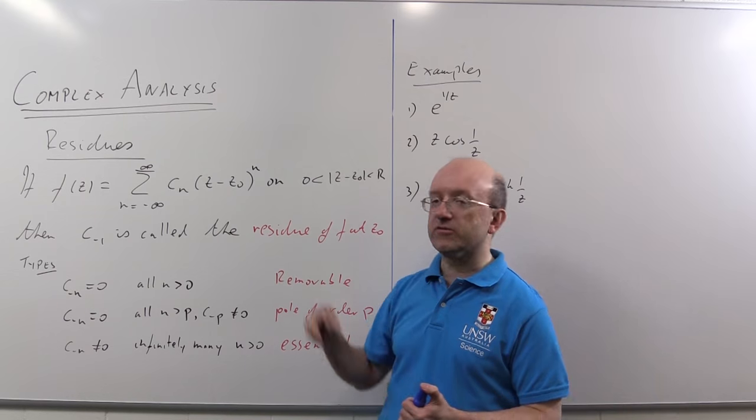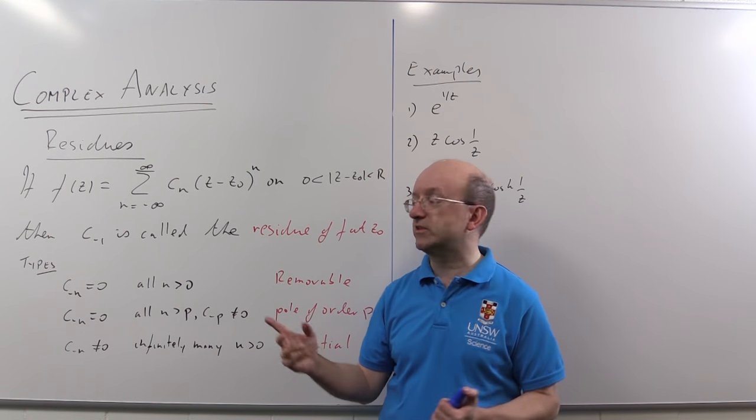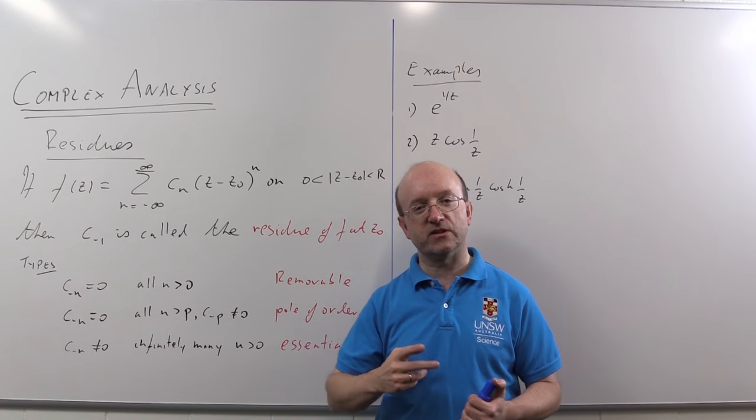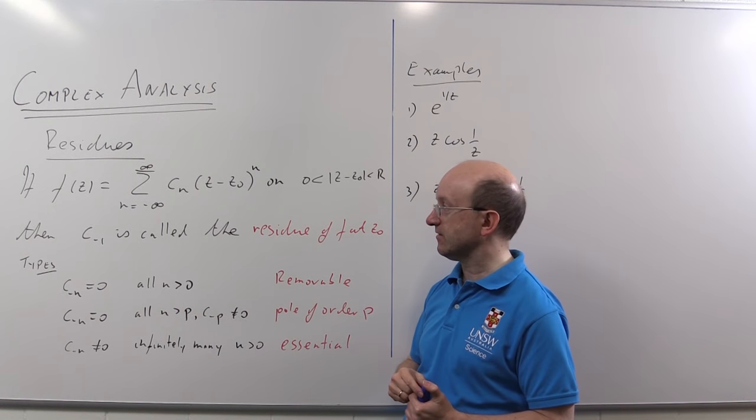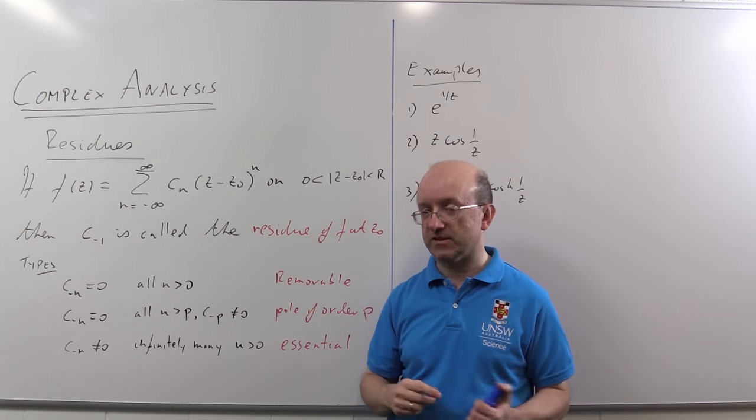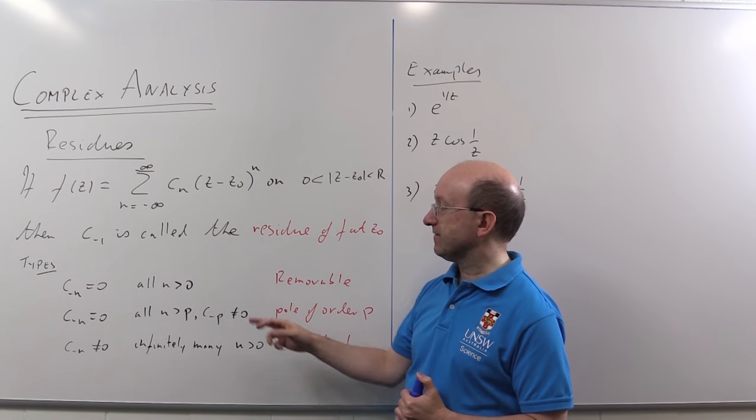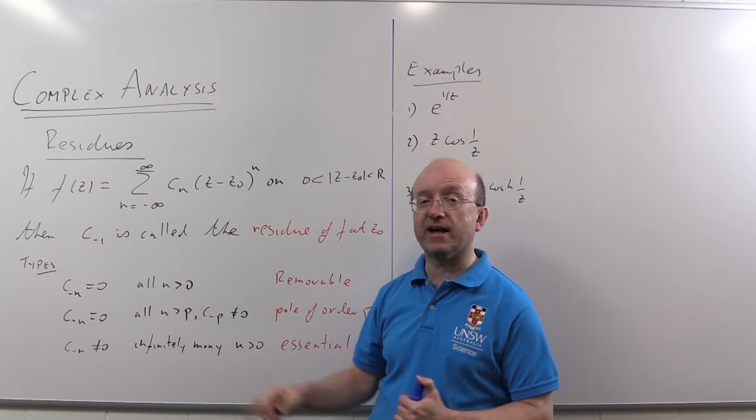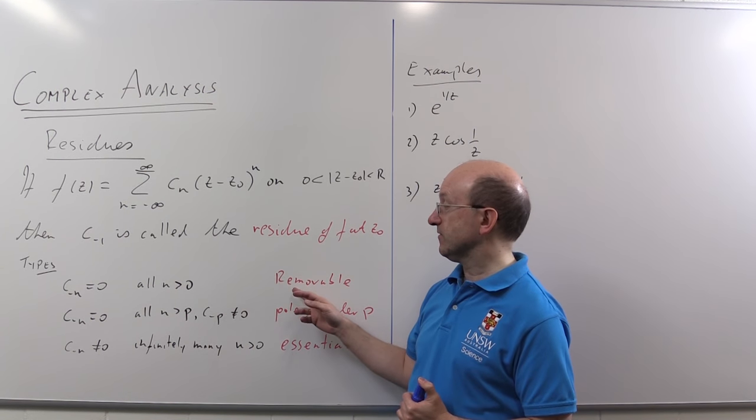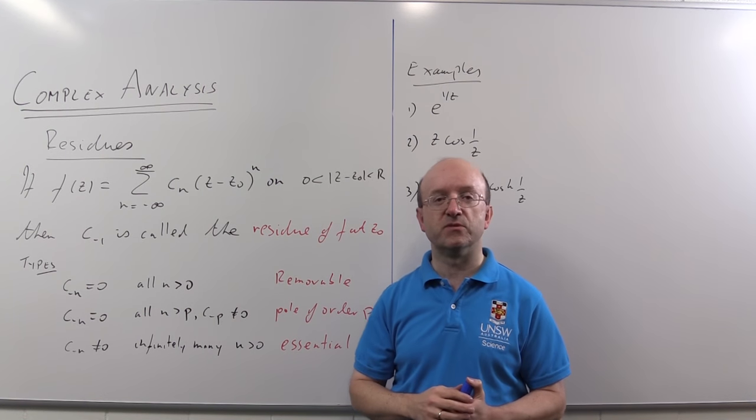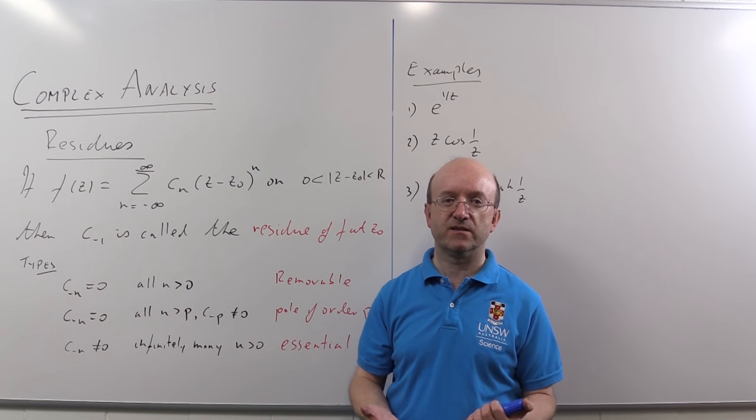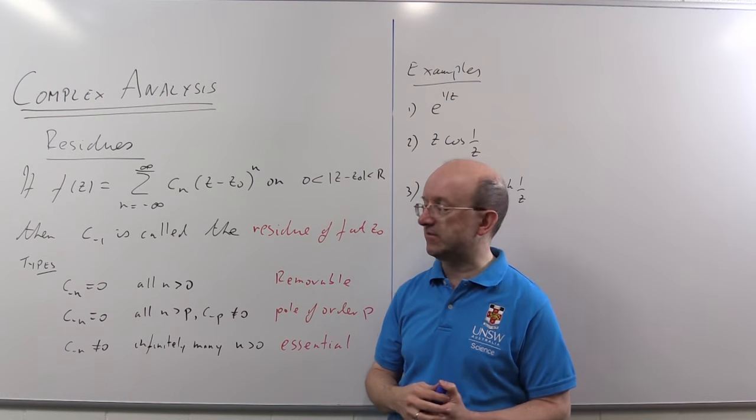Now depending on the shape of the Laurent series we've got here, we have essentially three different types of isolated singularity. If all the negative powers happen to have coefficients zero, then we refer to the singularity as removable. The function is really analytic at zero, it's just some sort of accidental definition.